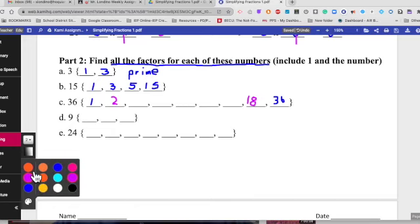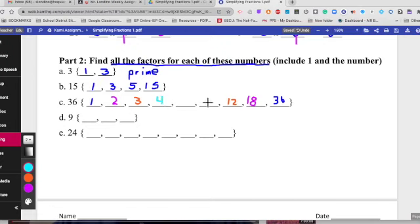And now we're going to go to the next color, which will give us 3 times what gives us 36. And that would be 12. And then we're going to switch colors up again. And we got 4. And that's 4 times 9. Gives us 36.